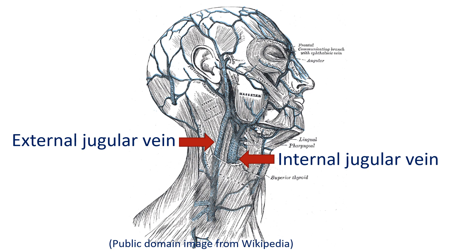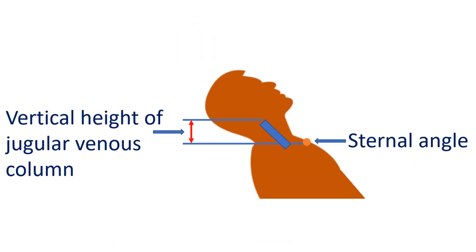Jugular venous pressure is measured with reference to the sternal angle. The sternal angle is 5 cm above the mid-right atrium in all positions. Normal internal jugular venous pulsations are not visible in the neck in the sitting position; hence, it is typically assessed with 45 degrees propped up position.